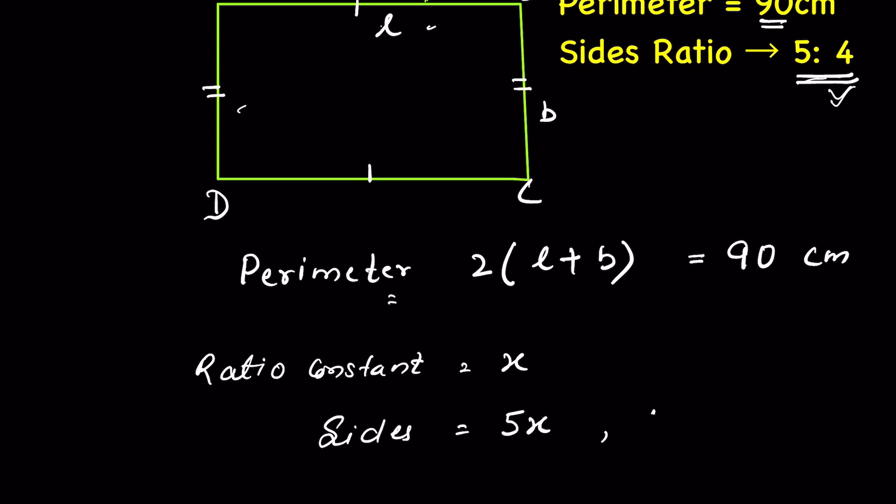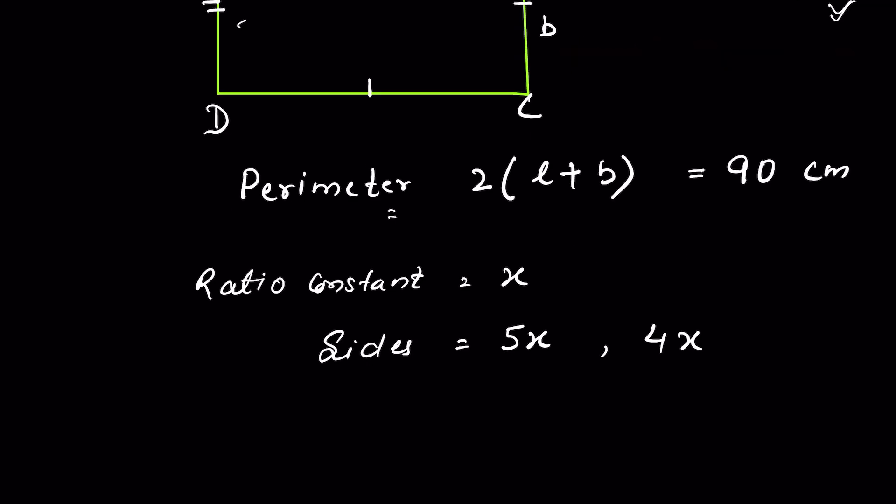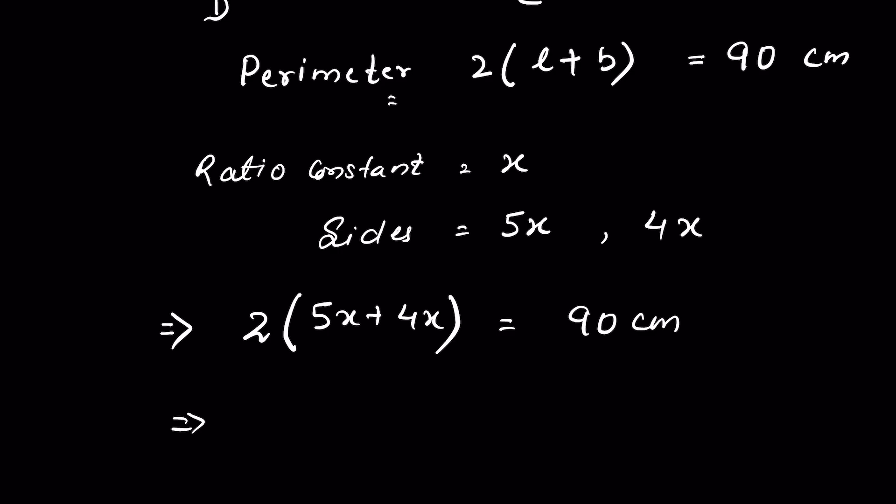So as per the formula of perimeter, it means it is 2 times 5x plus 4x is equal to 90 centimeter, or 5x plus 4x is 9x, so 9x times 2 is equal to 90.